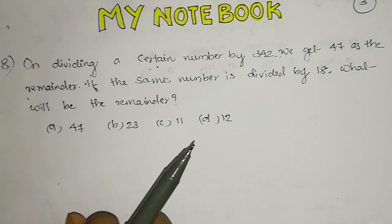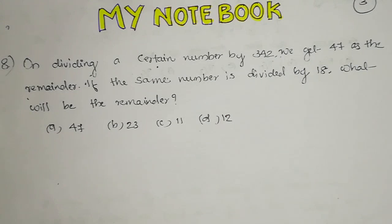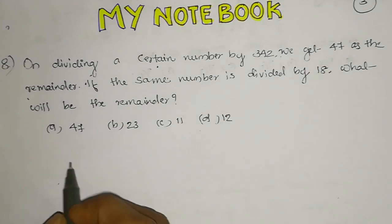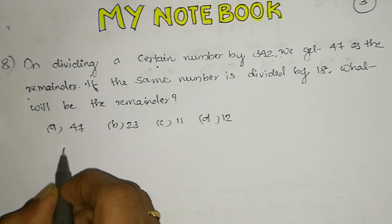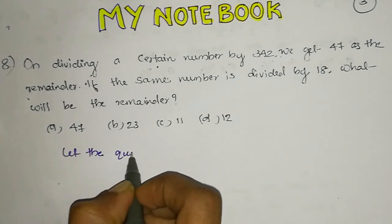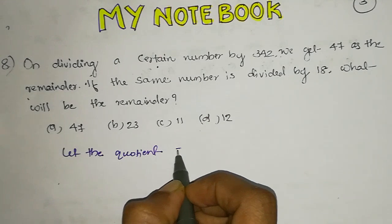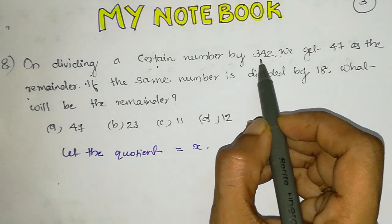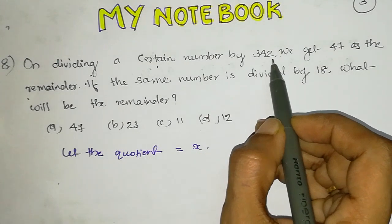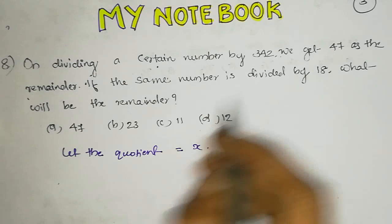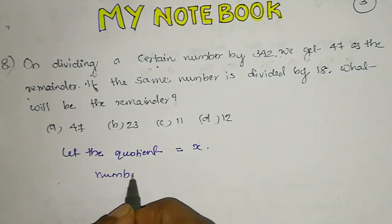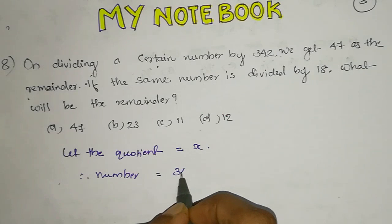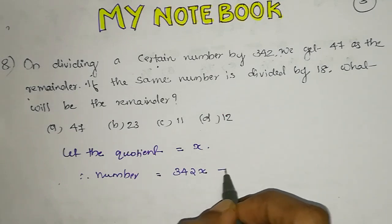If you have a number, you can use a method. Let the quotient equal to x. When divided by 342, the remainder is 47. Then the number is equal to 342 into x plus 47.